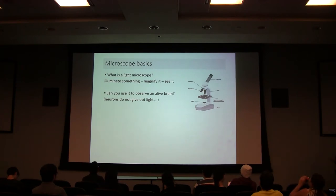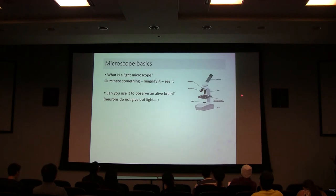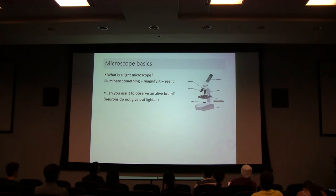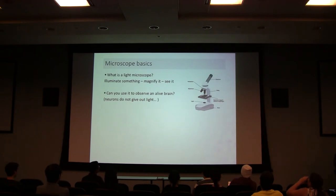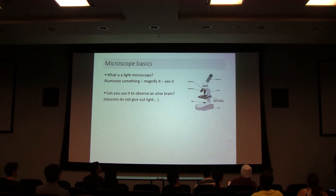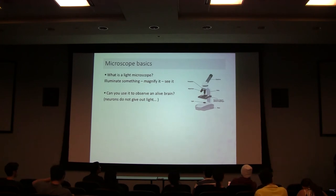Most of you have probably seen a basic microscope in the lab. You illuminate a sample on a platform, magnify it with two lenses, and observe it — simple. But can you put a brain on it and see neurons? The issue is neurons don't emit light by themselves, so you need to figure out how to make them visible.